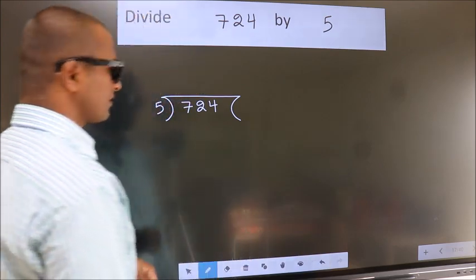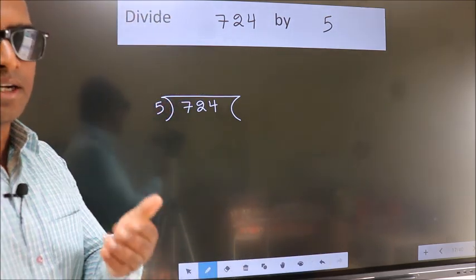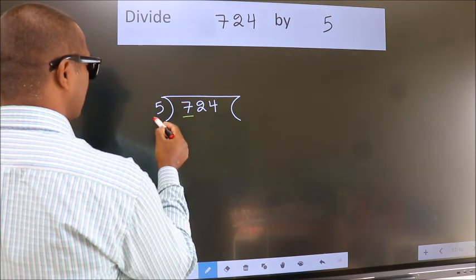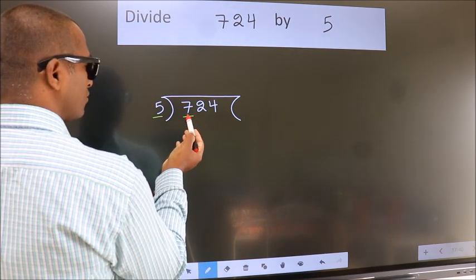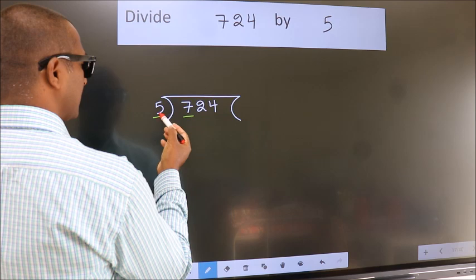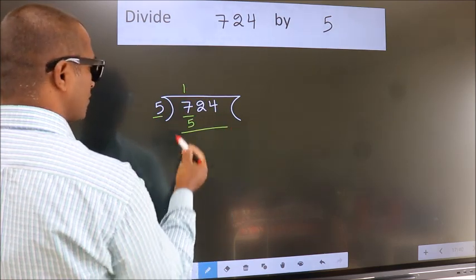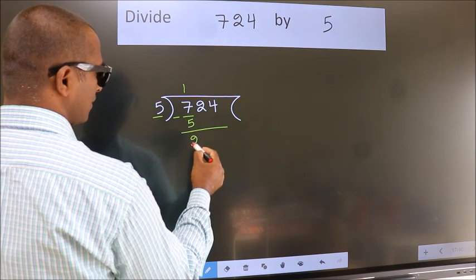This is your step 1. Next. Here we have 7, here 5. A number close to 7 in 5 table is 5 times 1 is 5. Now, we should subtract. We get 2.